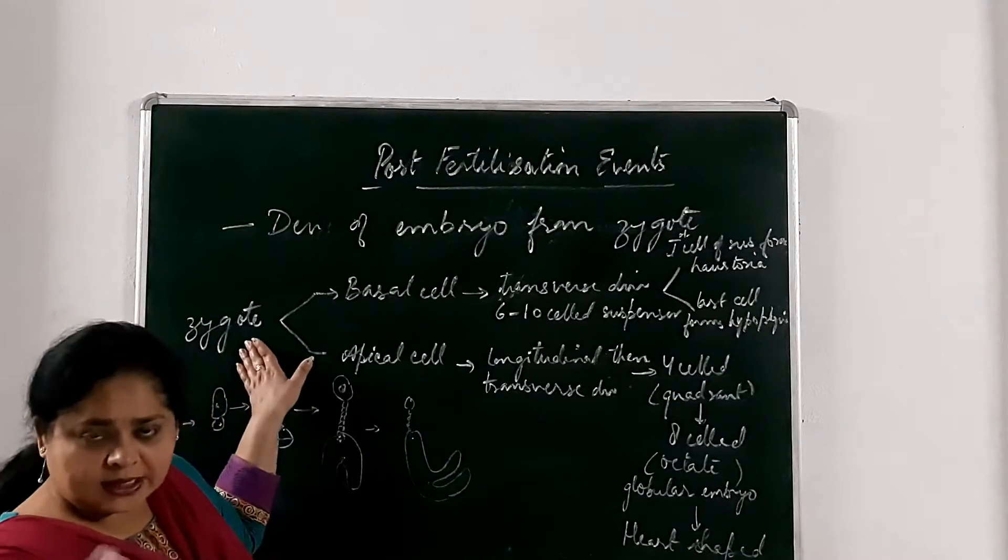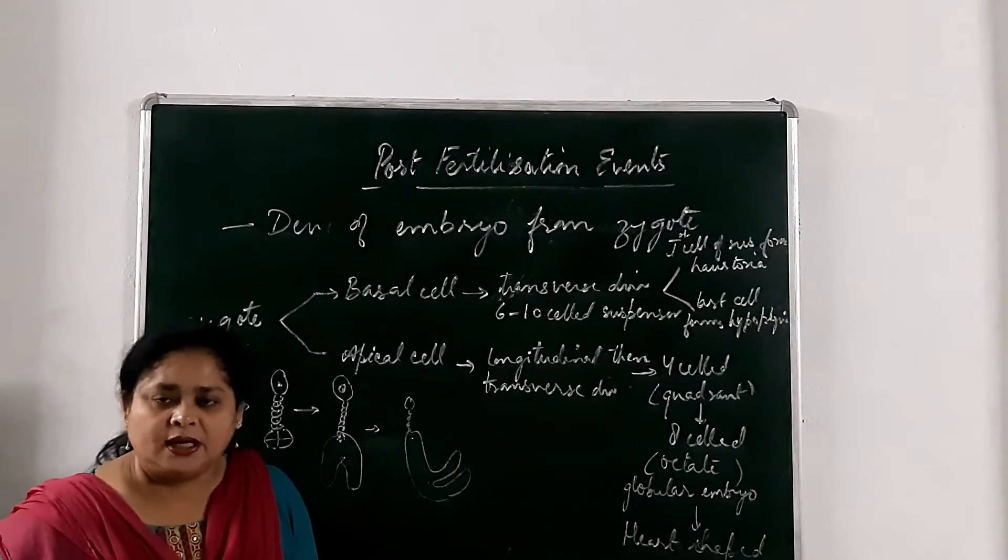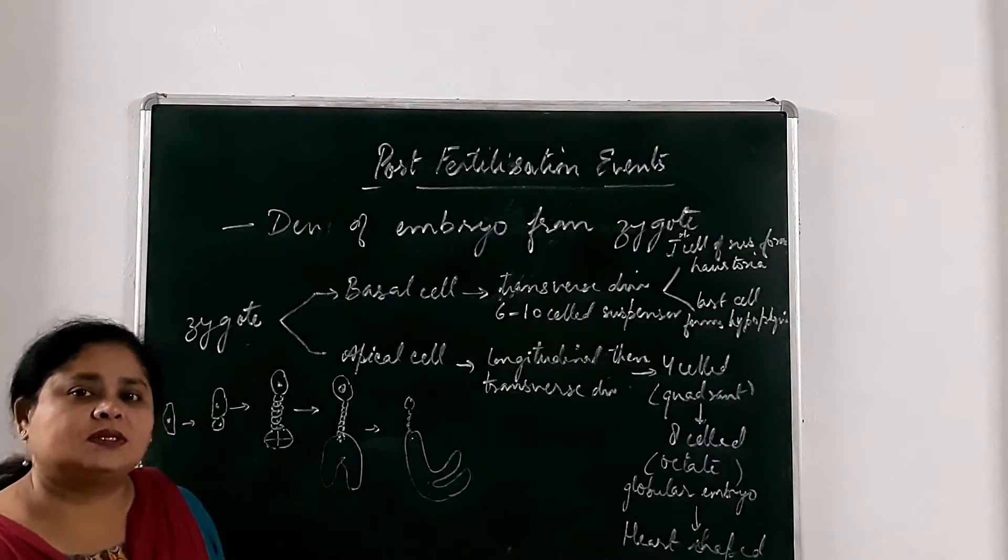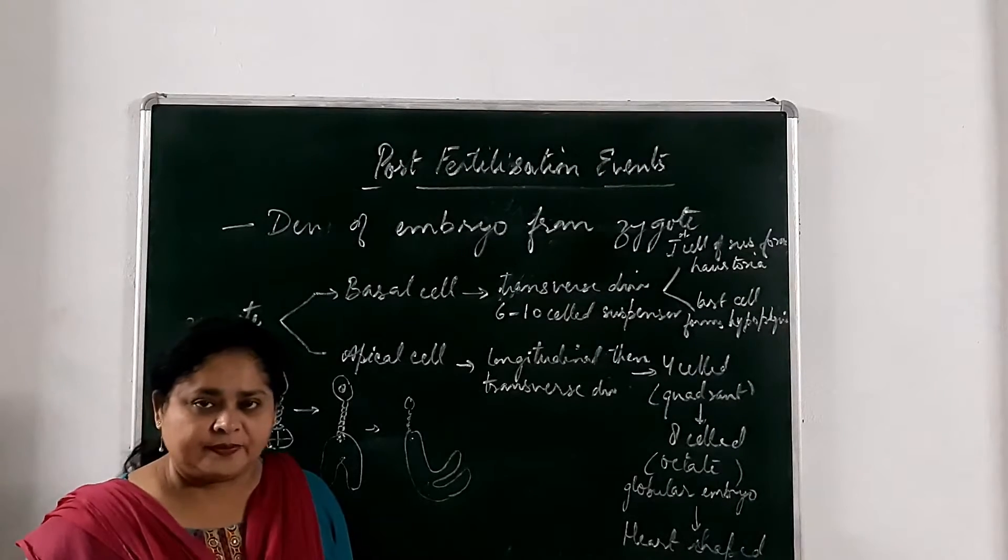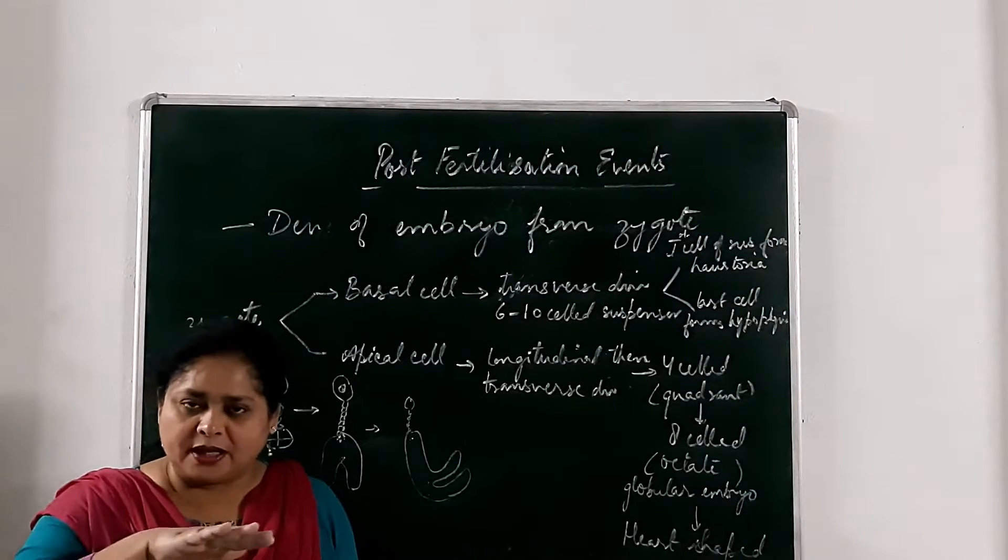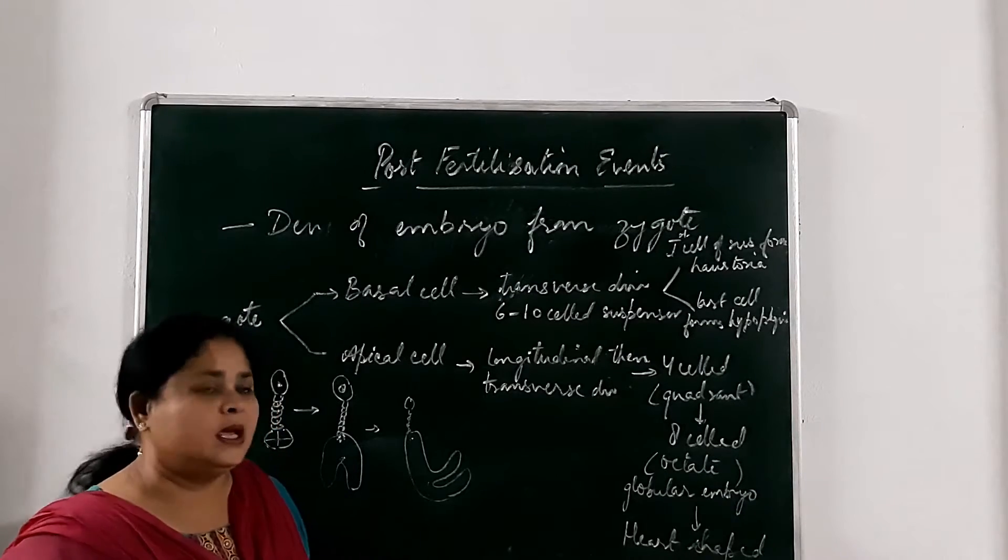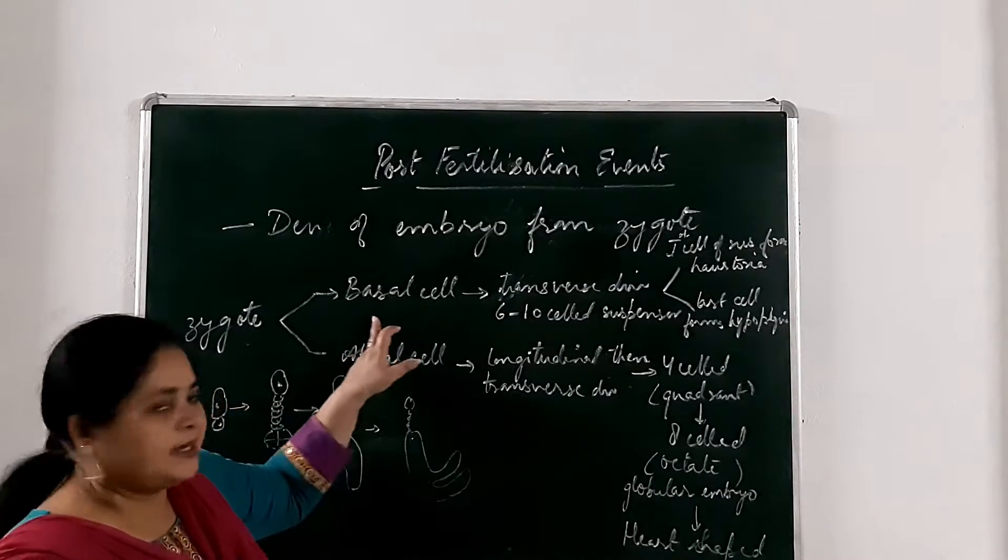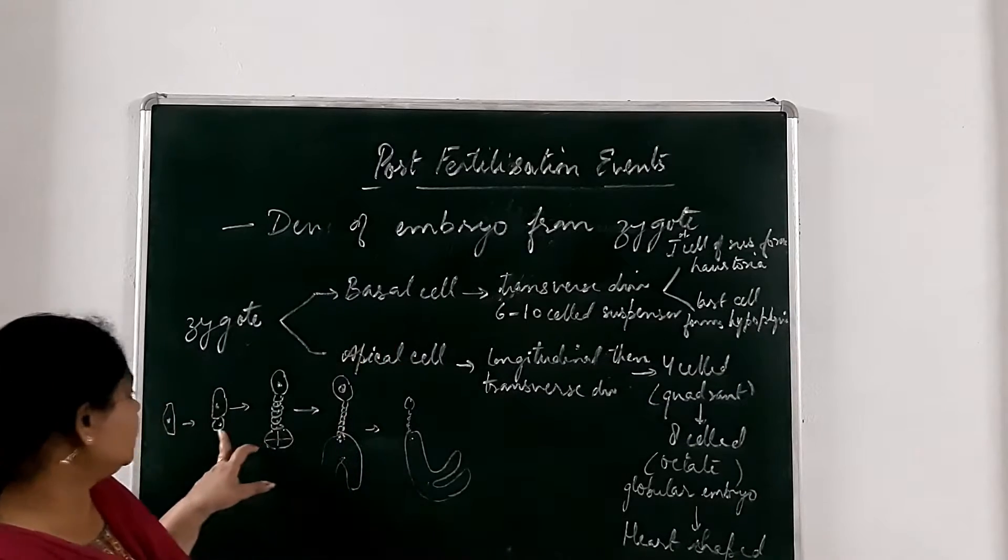The zygote is a single cell structure and it undergoes first transverse division. In the case of angiosperm, first of all, transverse division is formed at this stage. The zygote becomes a 2-cell body.